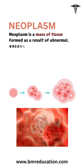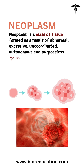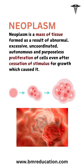A neoplasm is a massive tissue formed as a result of abnormal, excessive, uncoordinated, autonomous, and purposeless proliferation of cells, even after cessation of the stimulus for growth which caused it. So, a neoplasm is essentially an uncontrolled, unnecessary, and rebellious growth of cells that doesn't stop even when it should.